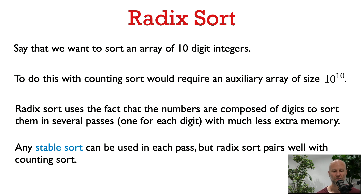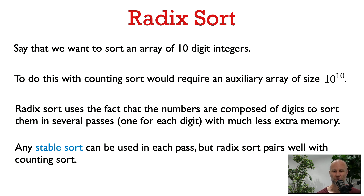Let's go back to Counting Sort. Recall that in Counting Sort, to sort an array of n numbers between 0 and k, the worst-case running time was theta of n plus k, and we also used theta of n plus k additional space. Now say that we want to sort an array of 10-digit integers. Counting Sort is automatically going to require an auxiliary array of size 10 to the power of 10, no matter how many numbers we want to sort. That's a big downside — we have to allocate all this memory even if we're just sorting a small list, and that downside limits the applicability of Counting Sort.